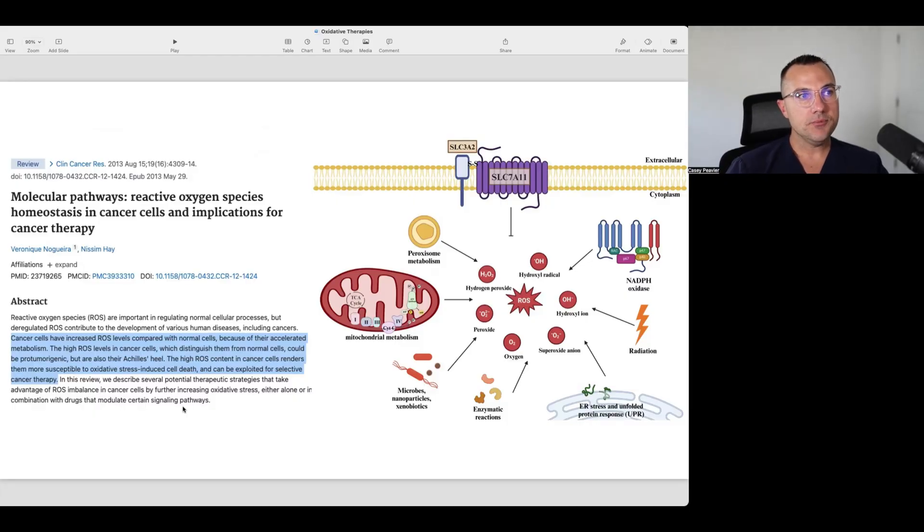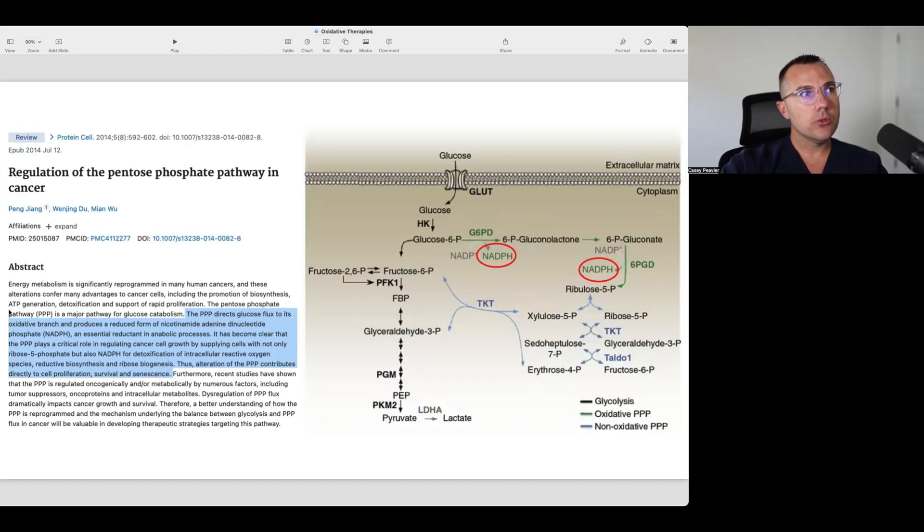The high ROS content in cancer cells renders them more susceptible to oxidative stress-induced cell death and can be exploited for selective cancer therapy, which we will be talking about throughout this series. So let's start to dissect the various ways that cancer cells use our own endogenous antioxidant systems to their advantage as a way to protect themselves and set up this internal metabolic shield system.